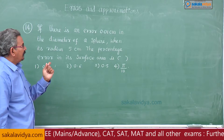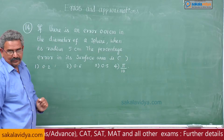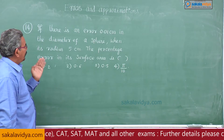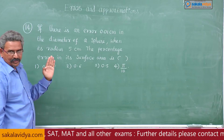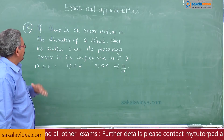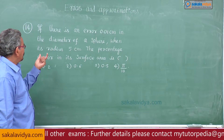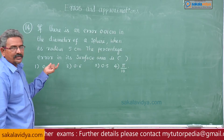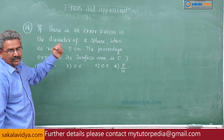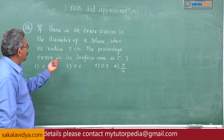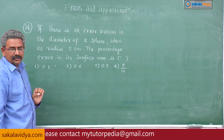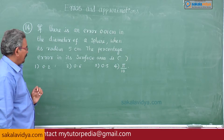The error in the diameter is given. Let x be the diameter of the sphere, then delta x is given. Since radius is 5 centimeters, x is equal to twice the radius, so x is equal to 10 centimeters.